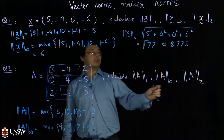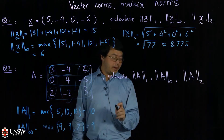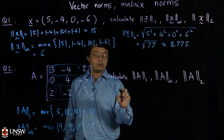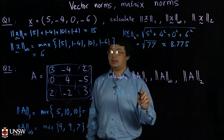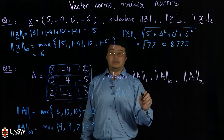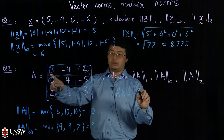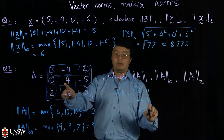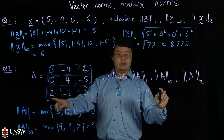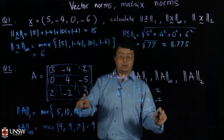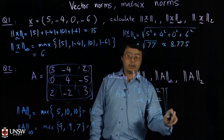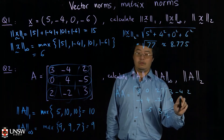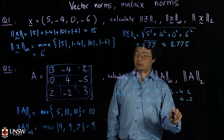For the two norm of the matrix A, it's a bit complicated — there are three steps. First you have to compute A transpose A. So A transpose A is the matrix [3, -4, 2; 0, 4, -5; 2, -2, 3] transposed, multiplied with matrix A [3, -4, 2; 0, 4, -5; 2, -2, 3].